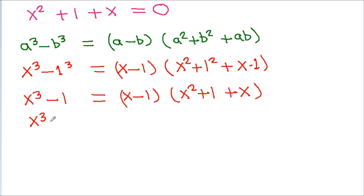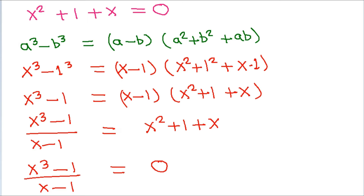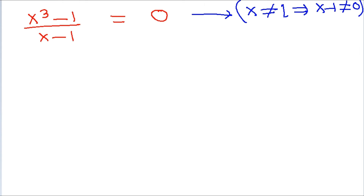Since x squared plus x plus 1 is equal to 0, we get x cubed minus 1 divided by x minus 1 equals 0. Also, x is not equal to 1, so x minus 1 is not equal to 0. Multiplying both sides by x minus 1, we get x cubed minus 1 equals 0, so x cubed equals 1.